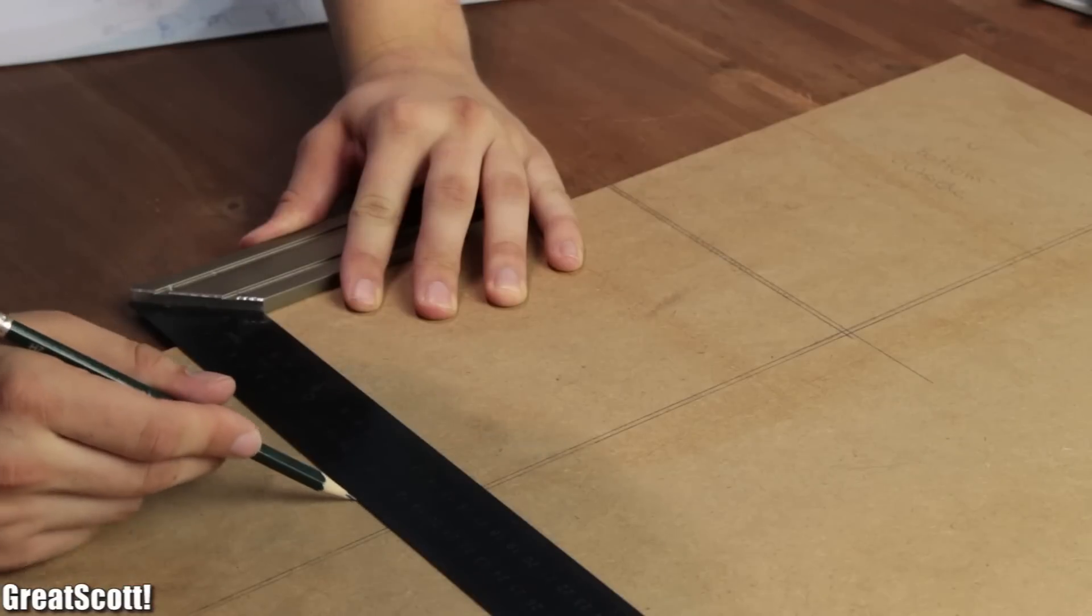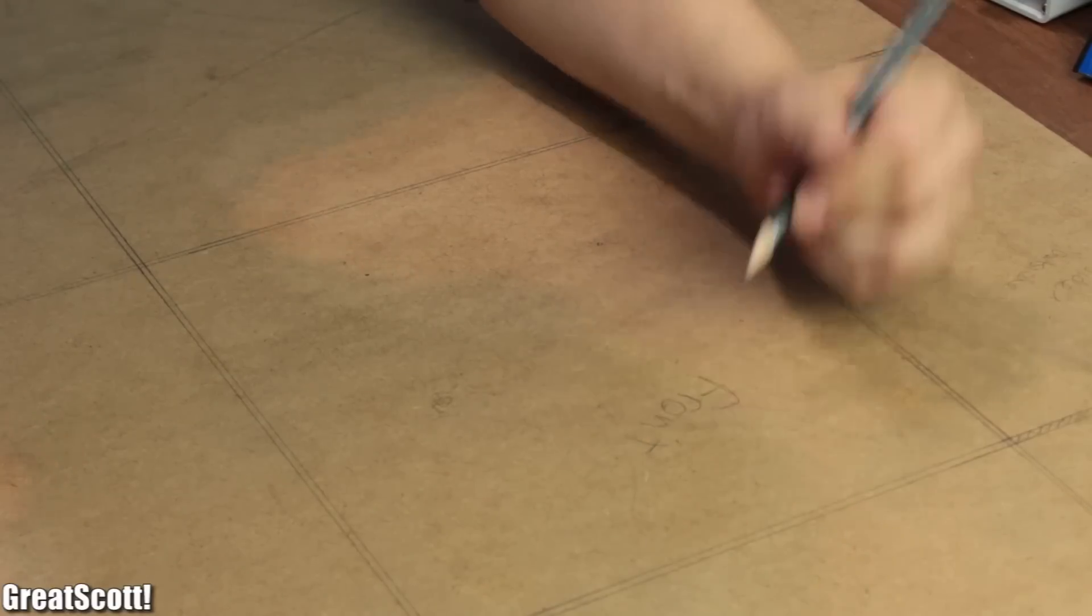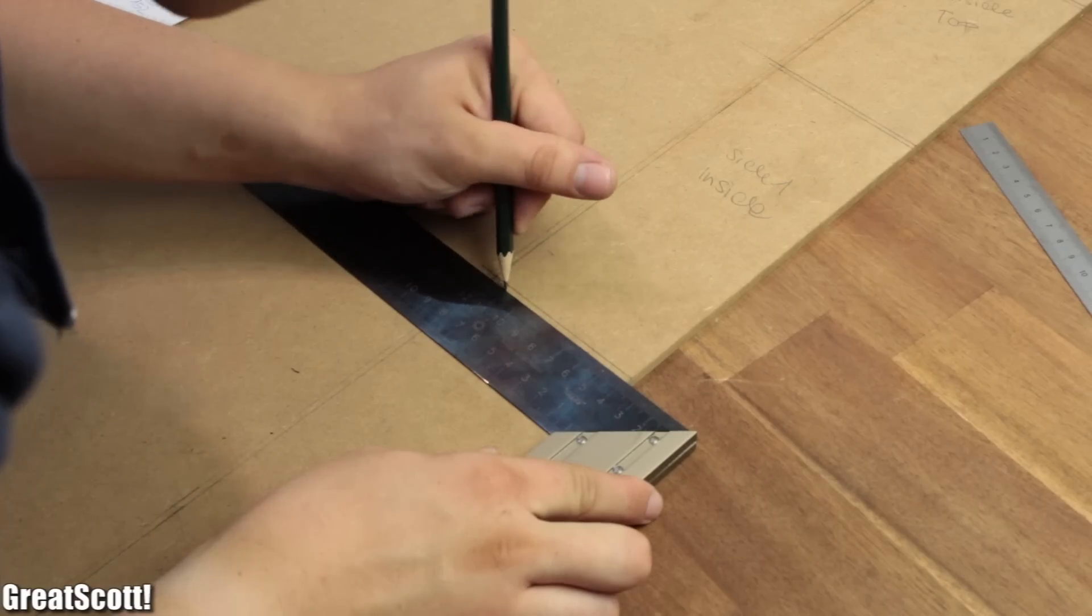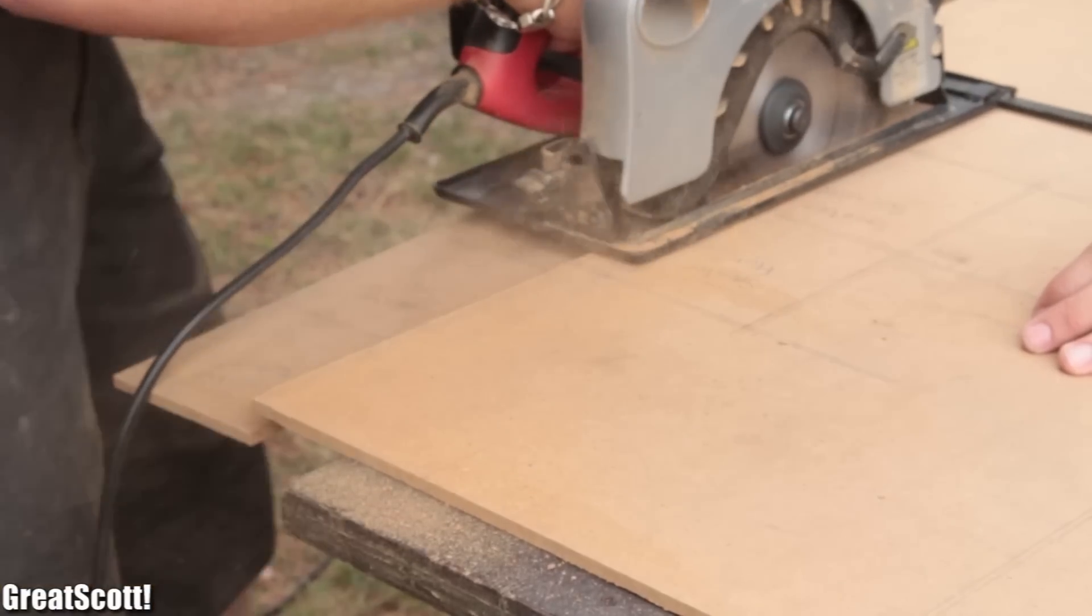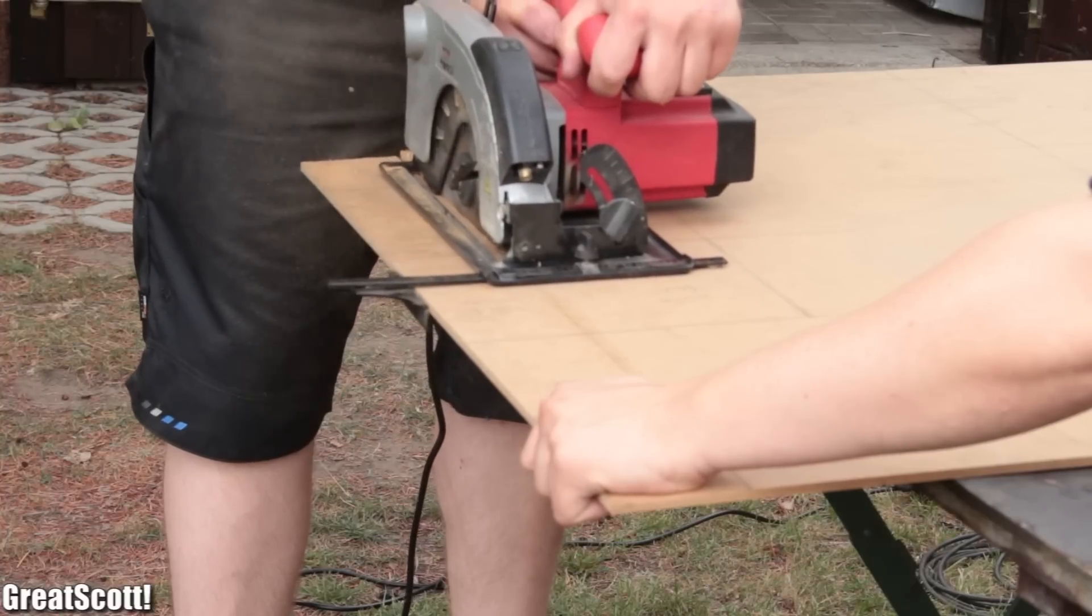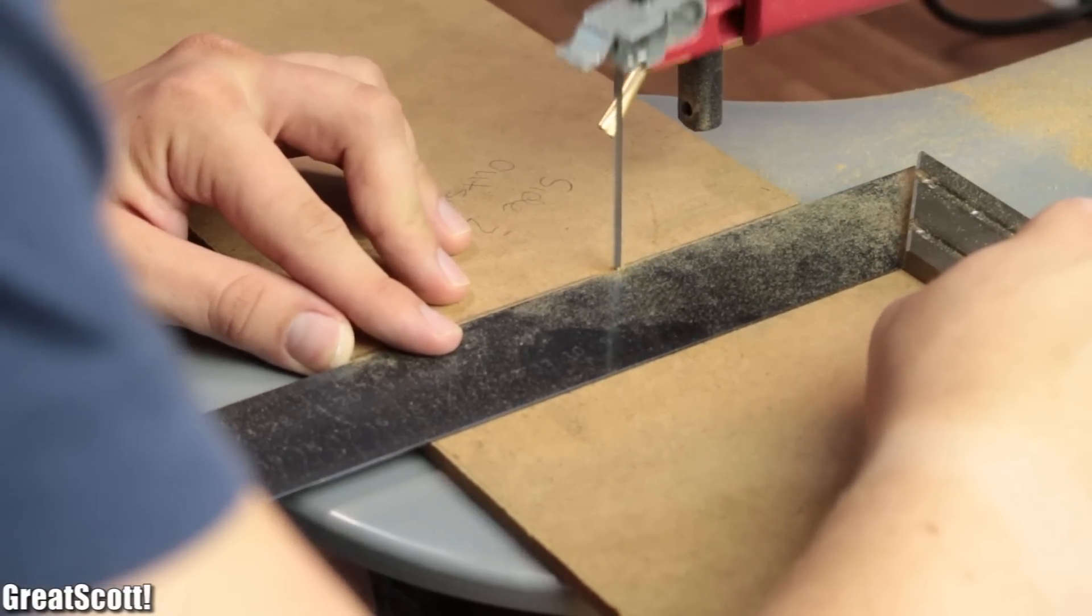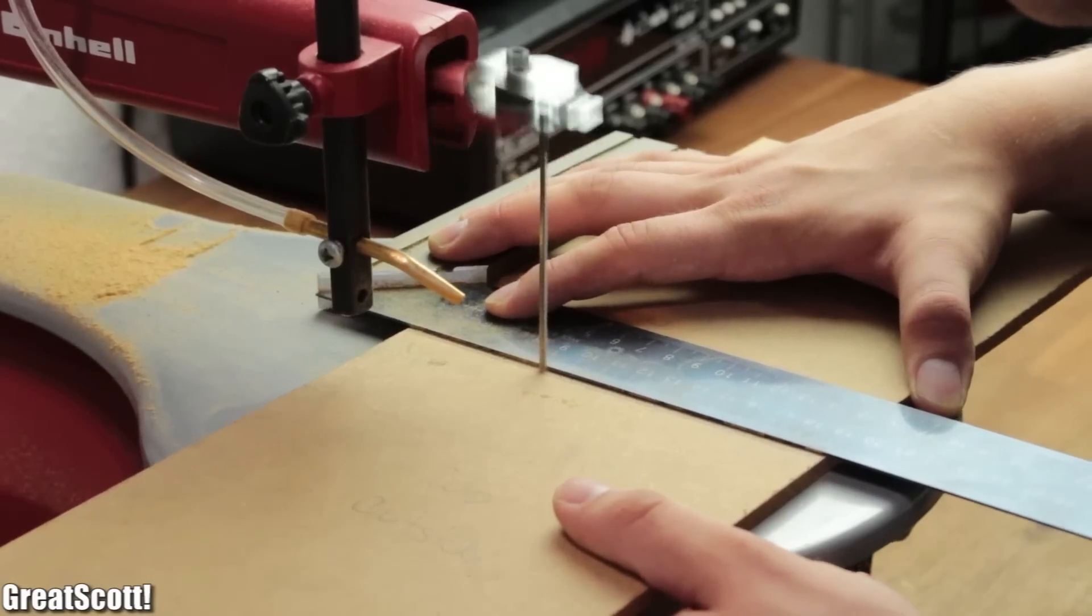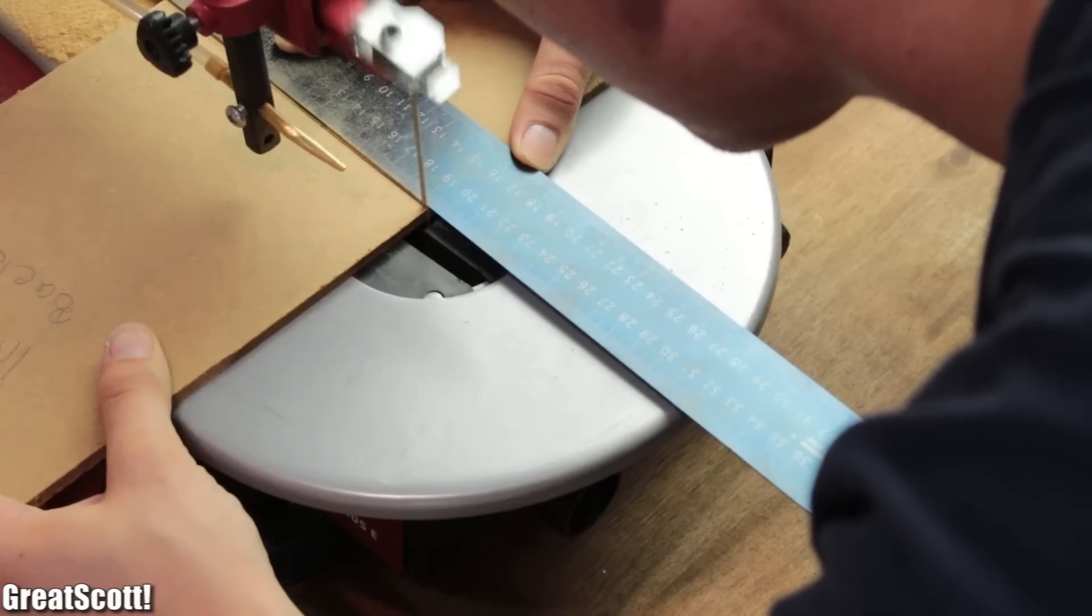I started by marking the measurements for the inner and outer layer onto my piece of MDF and used a jigsaw to cut out the rough shape. Afterwards, I finished all of my necessary MDF pieces with the help of an angle and my decoupier saw.